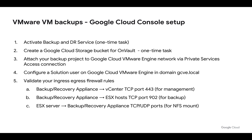In terms of setup, there are two halves to this. First, we do some setup in the Google Cloud Console. We activate the backup and DR service and create a Google Cloud Storage bucket. We attach our backup project, where the backup and DR appliance is running, to the Google Cloud VMware Engine network via Private Services Access Connect. We then configure a solution user in Google Cloud VMware Engine and use that solution user as part of authentication. Finally, we validate our firewall rules.